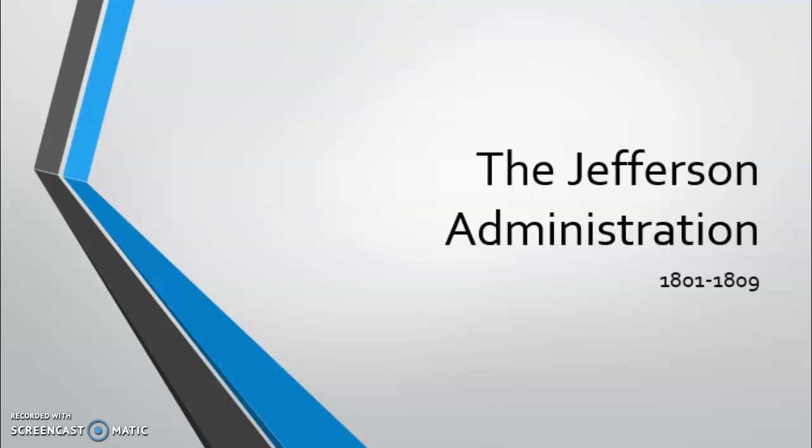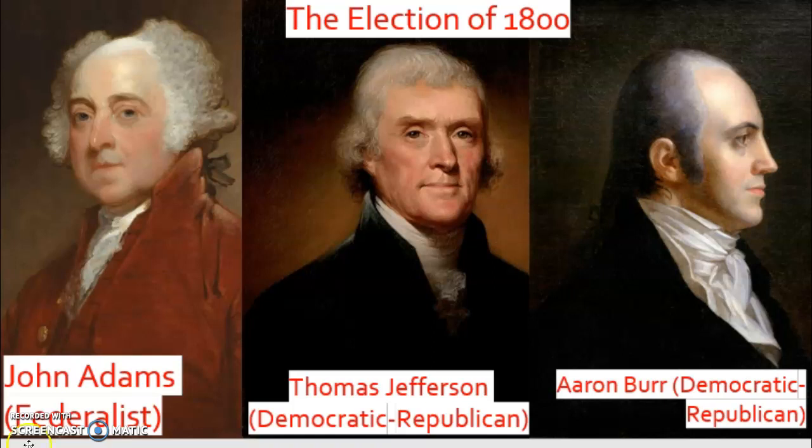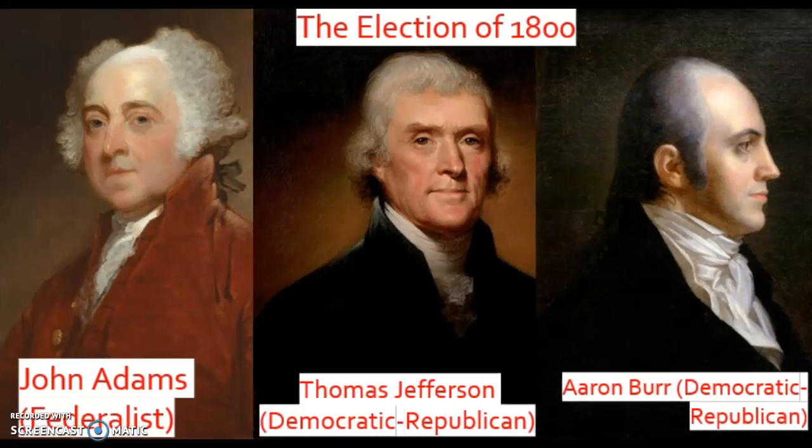The fury over the Alien and Sedition Acts influenced the pivotal presidential election of 1800. The Federalists nominated John Adams, while Thomas Jefferson and Aaron Burr were the Democratic-Republican nominations. The Federalists had claimed that Jefferson's election could bring civil war and anarchy.